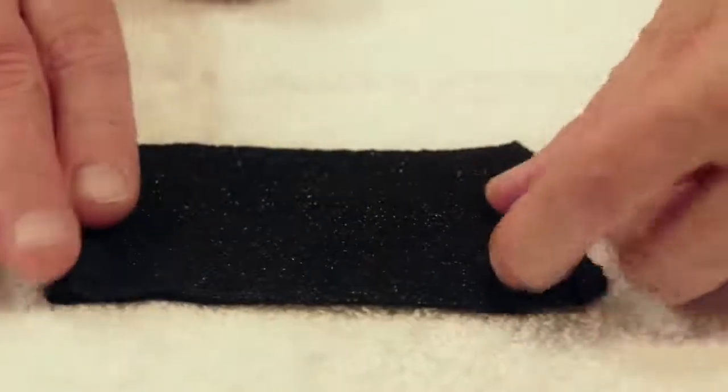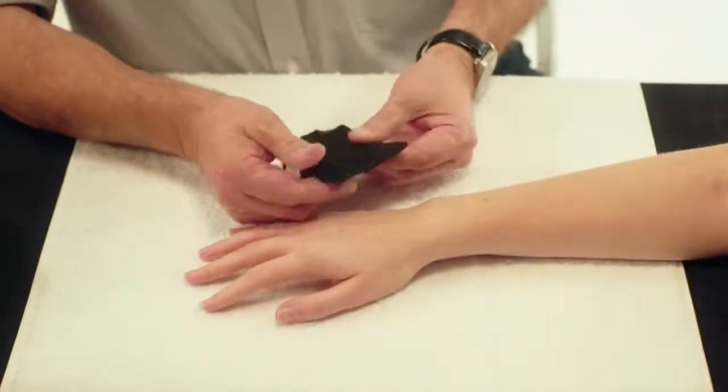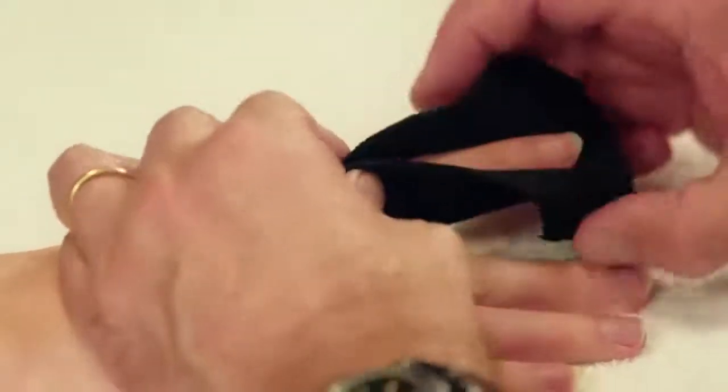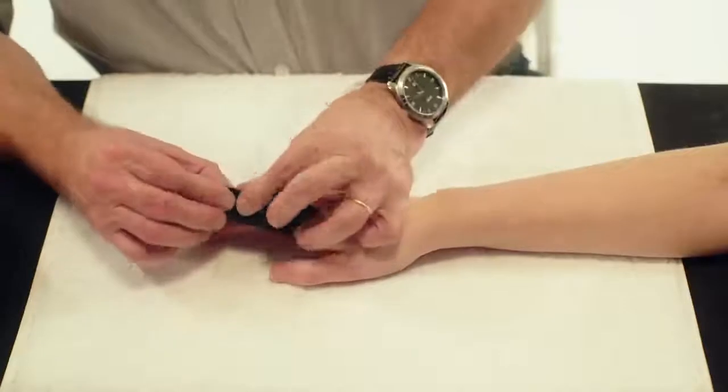Stretch it slightly. Place the Orficast on the palmer side of the finger and pinch it together on the dorsal side.